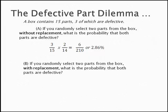What about Part B? The question asks, if you randomly select two parts from the box with replacement, what is the probability that both parts are defective? Now, we have independent events because we are putting the part back into the box before we draw the second one. This means that the probability that I get a bad part is 3 out of 15.